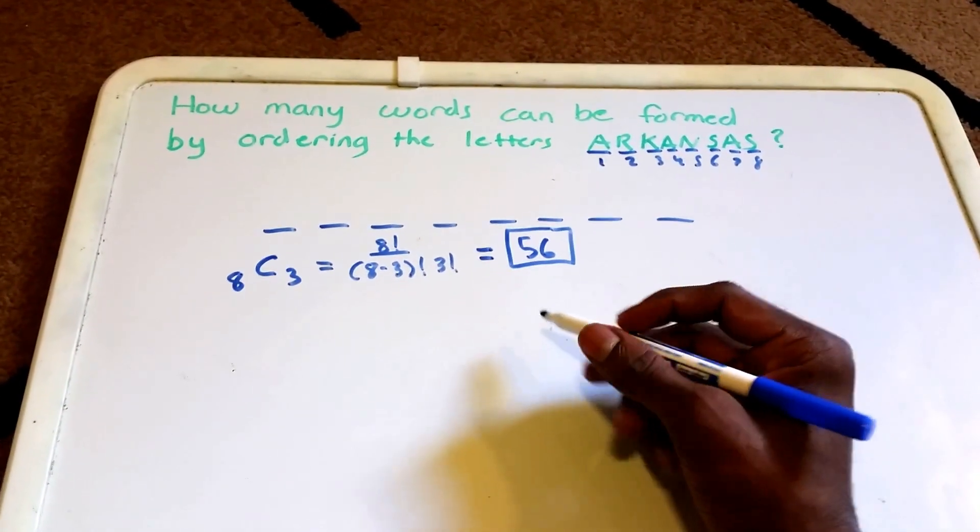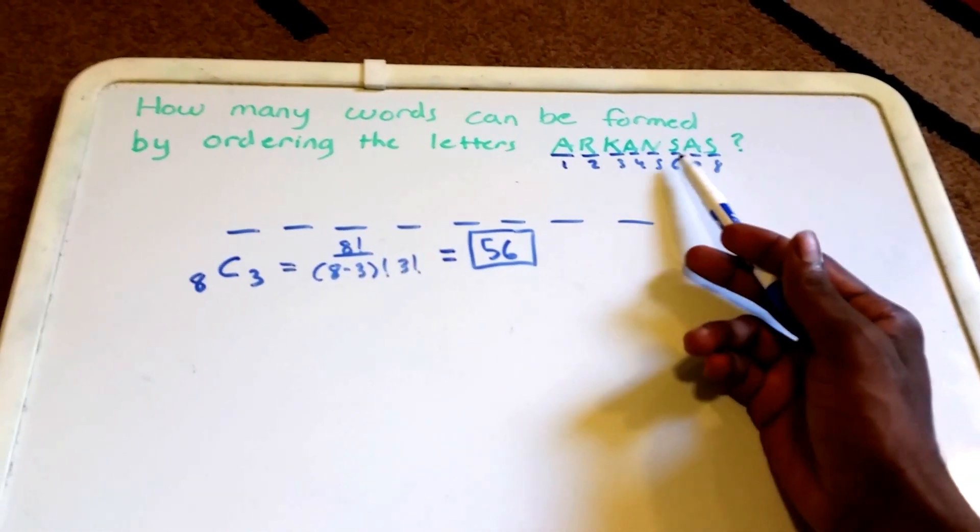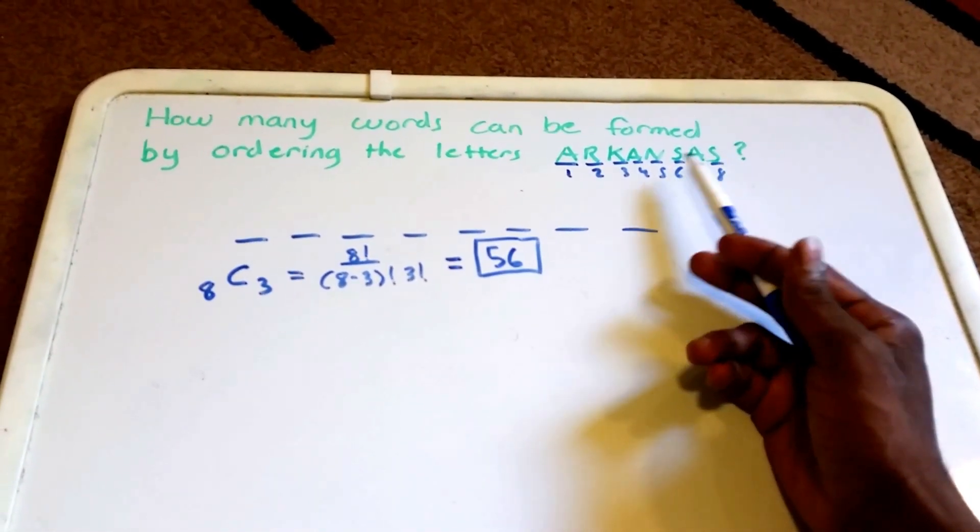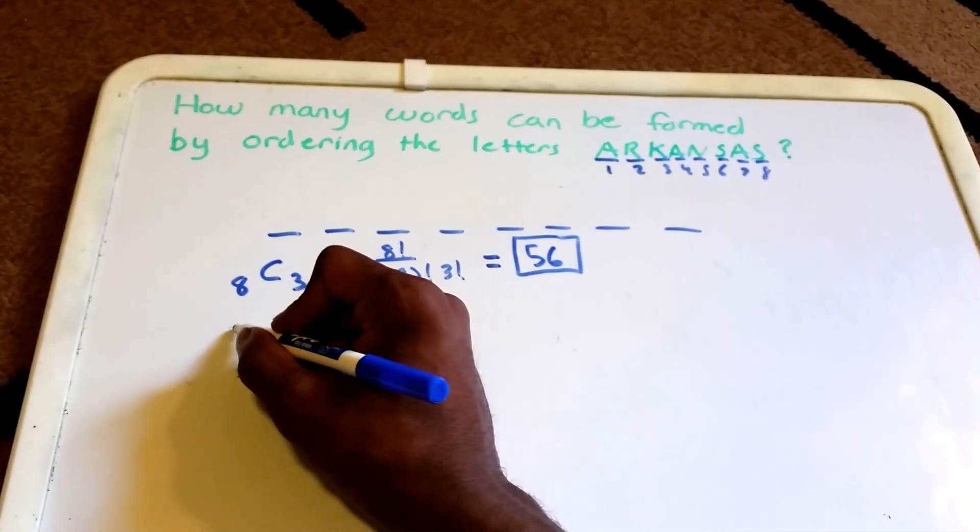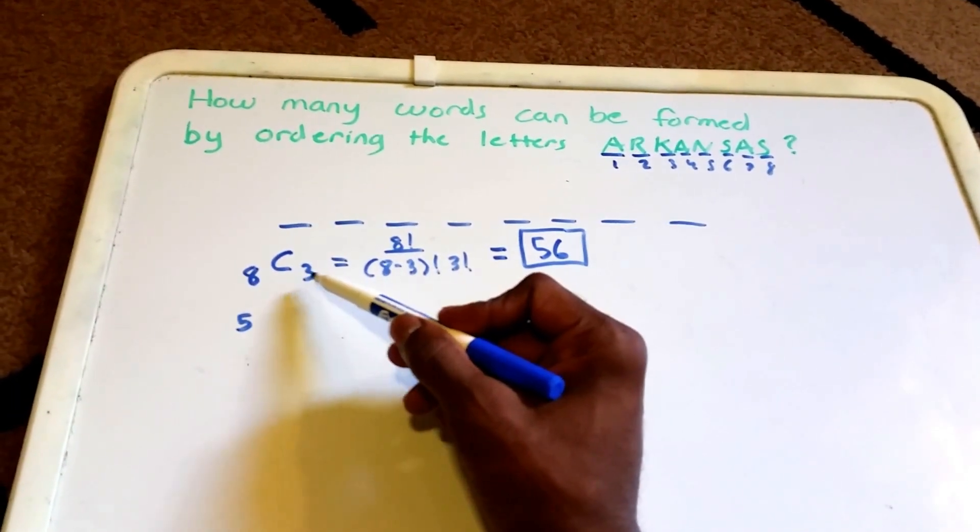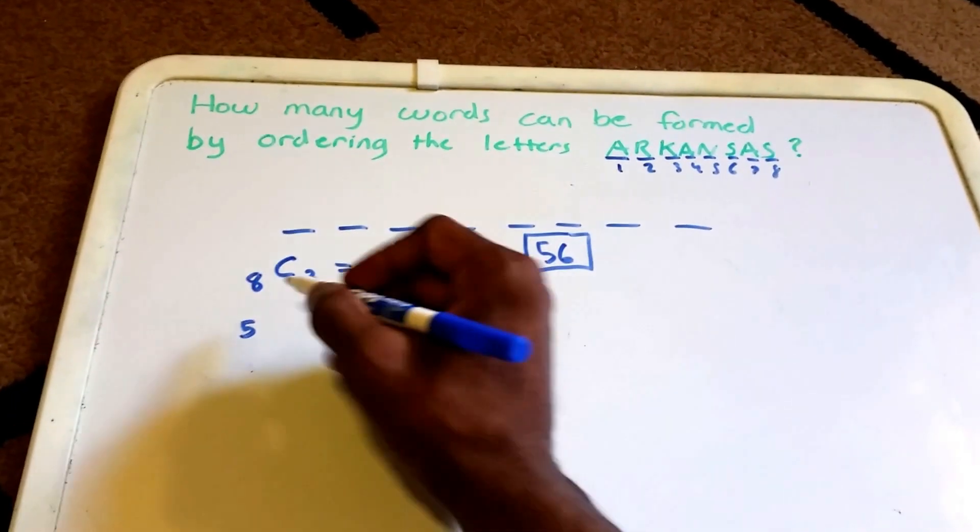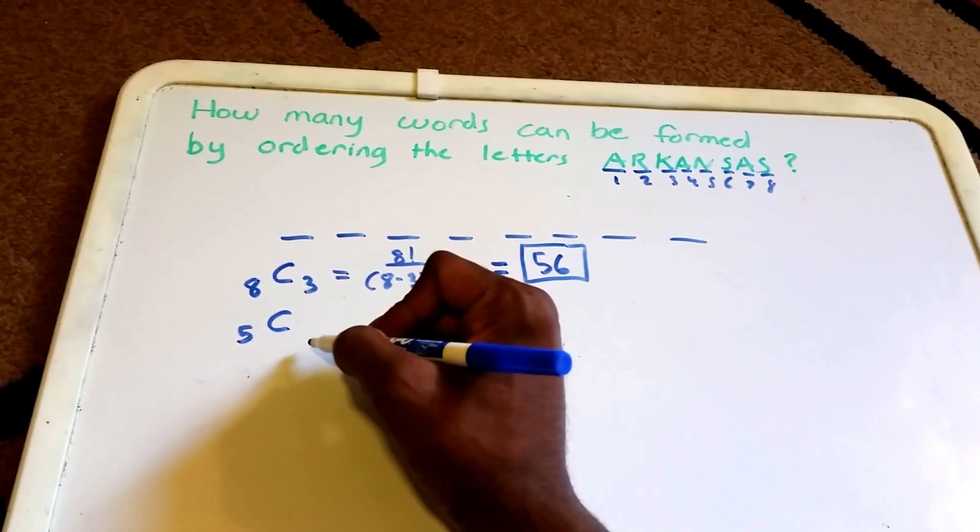Next up, I'm looking at these S's because they are the next letters that appear the most. We have five spots left because we chose three of them already, so now we have 8 minus 3, which is 5.